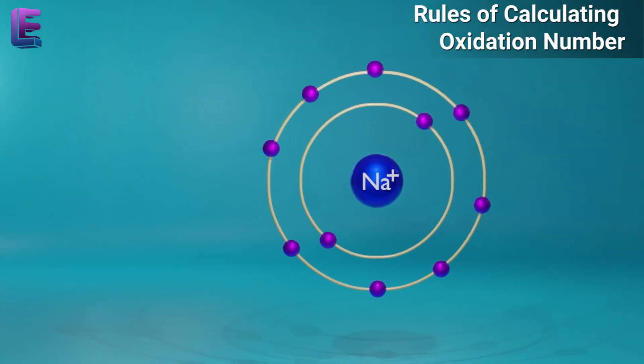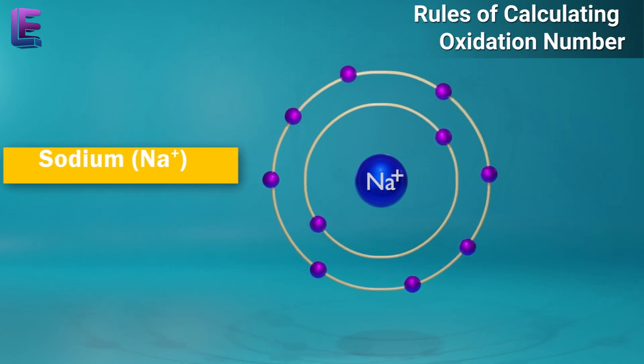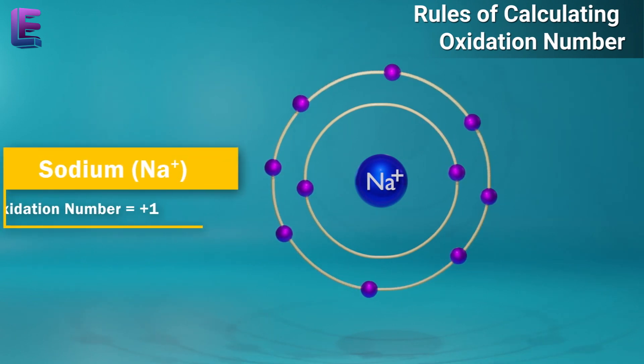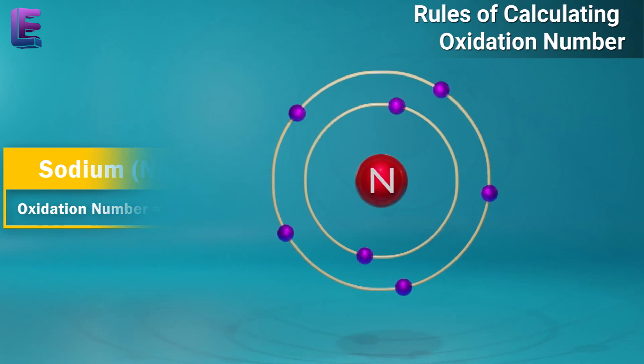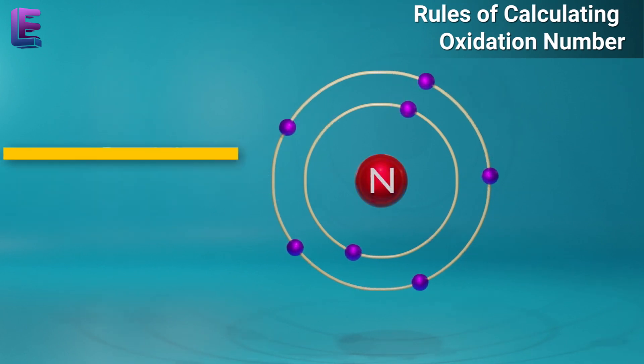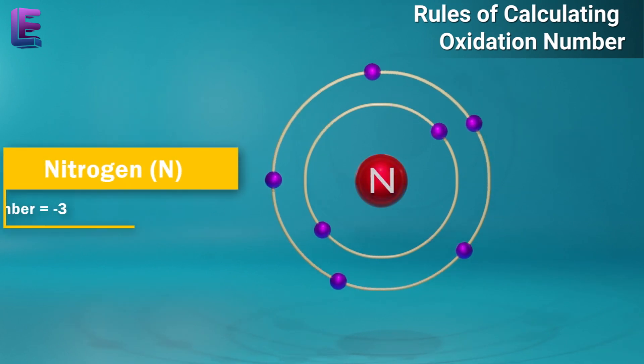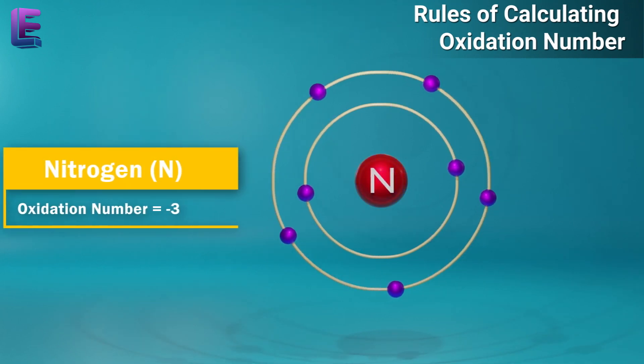For ions composed of only one atom, the oxidation number is equal to the charge on the ion. Thus, the Na⁺ ion has an oxidation number of plus one, and N³⁻ has the oxidation number of minus three.